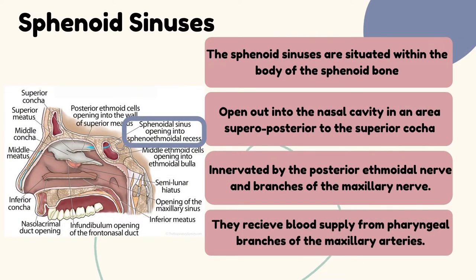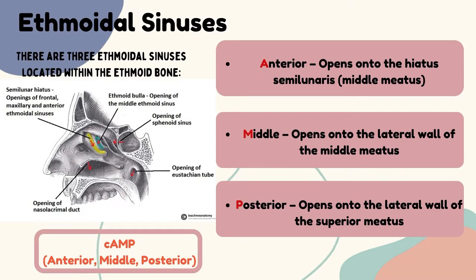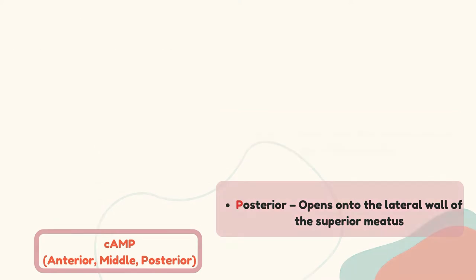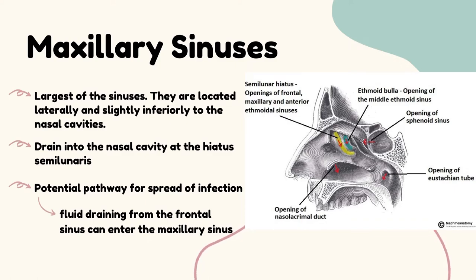The sphenoid sinuses are situated within the body of the sphenoid bone. They open into the nasal cavity in an area superior-posterior to the superior concha, also known as the sphenoethmoidal recess. They are innervated by the posterior ethmoidal nerve and branches of the maxillary nerve, and receive blood supply from pharyngeal branches of the maxillary arteries. The ethmoidal sinuses can be memorized as A, M and P: anterior opens onto the hiatus semilunaris, middle opens onto the lateral wall of the middle meatus, and posterior opens onto the lateral wall of the superior meatus. The maxillary sinuses are the largest and drain into the nasal cavity at the hiatus semilunaris beneath the frontal sinus opening — a potential pathway for spreading infection.